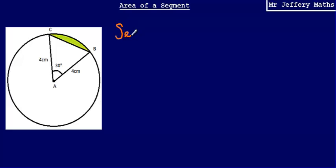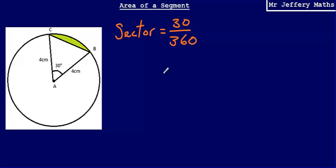First, I'm going to calculate the area of the sector. All I need to do is take the proportion of the circle that this sector is taking up. This angle is telling me that this sector is taking up 30 degrees out of the 360 degrees in the entire circle. So the proportion is 30 over 360, and then I simply multiply that by the area of the entire circle using pi r squared. So it will be 30 over 360 multiplied by pi multiplied by 4 squared.